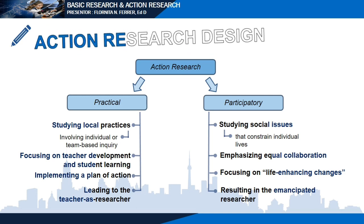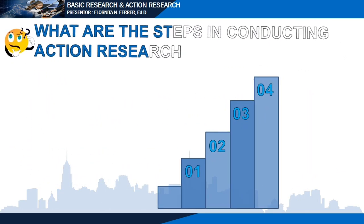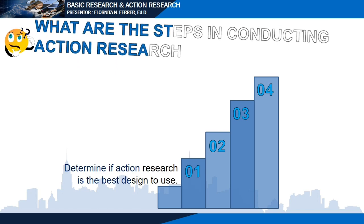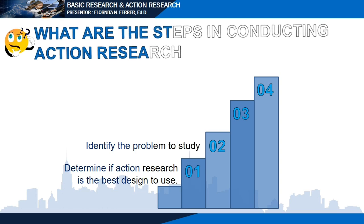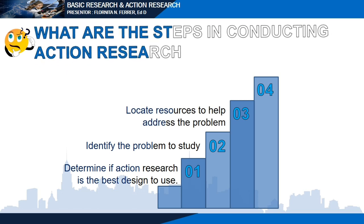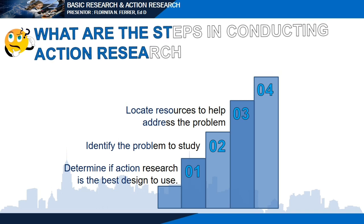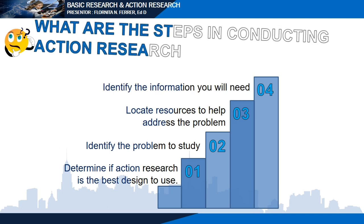What are the steps in conducting action research? First, determine if action research is the best design to use for the particular problem you have in mind. Second, identify the problem you wish to study. Third, locate your sources to help address the problem — do you have the resources needed to come up with a solution? And fourth, identify the information you need in order to solve that particular problem.